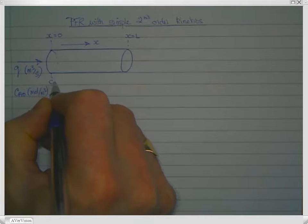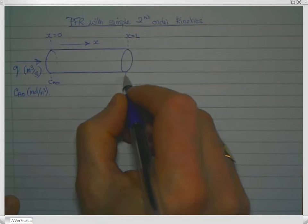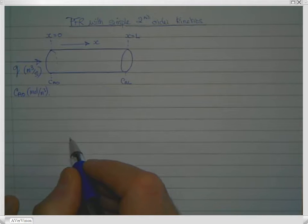And over those same distances, Ca varies from Ca0 at the inlet, and we'll say it's got a value of CaL at the outlet.